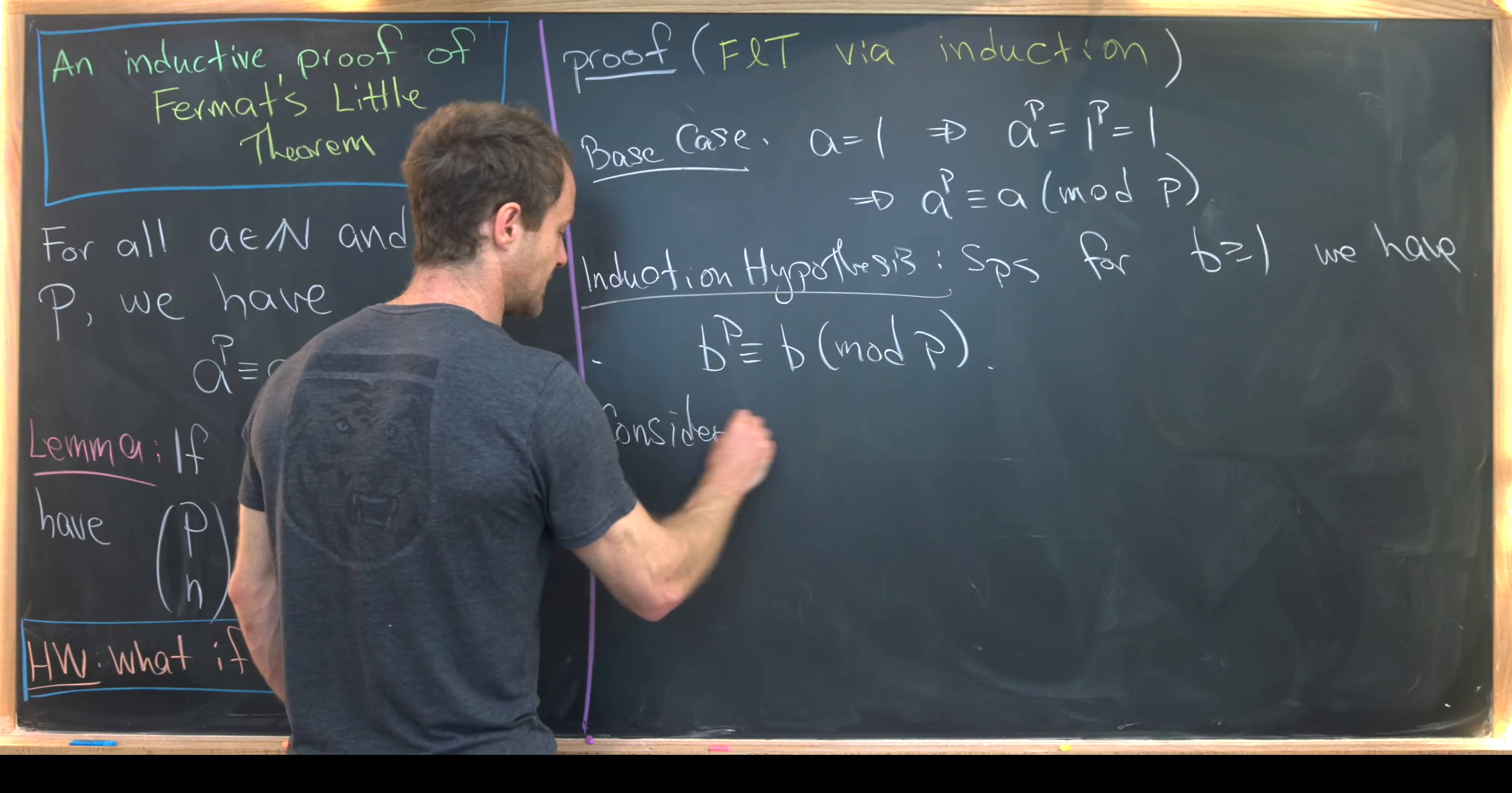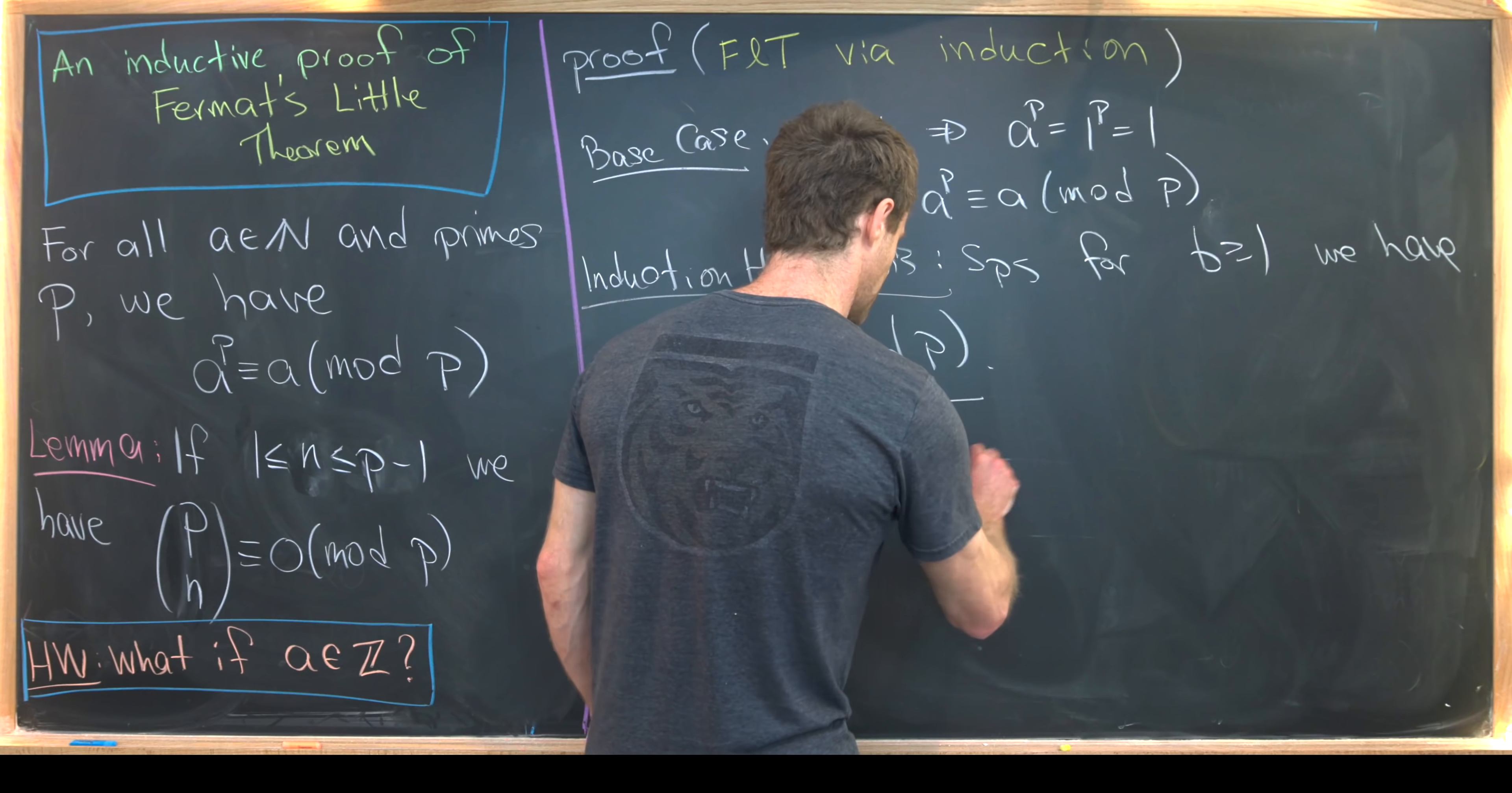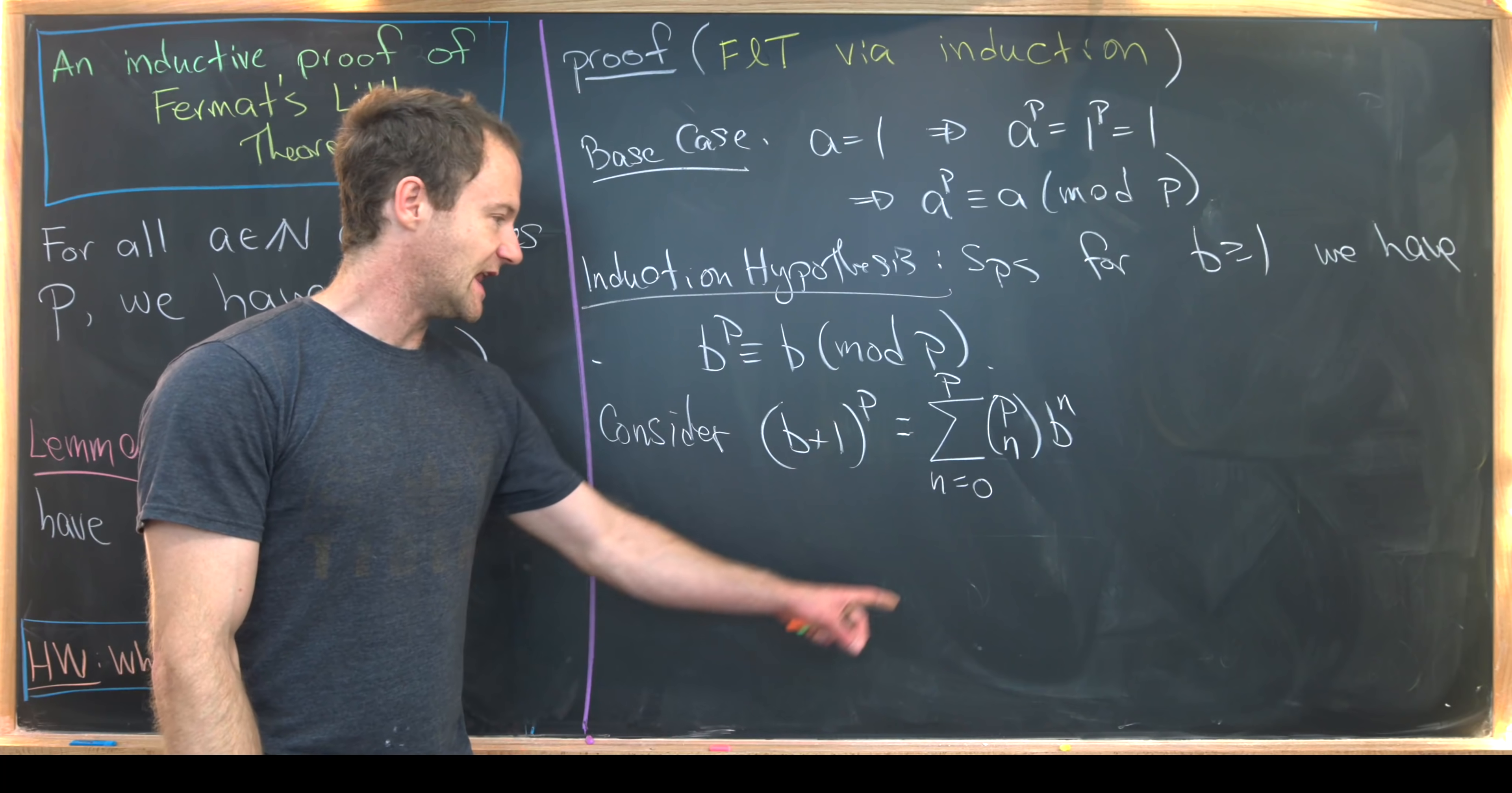So consider B plus 1 to the P. But via the binomial theorem, we can expand this fairly easily. So that's going to be the sum as N goes from 0 all the way up to P of P choose N times B to the N. Again, that's just by the binomial theorem.